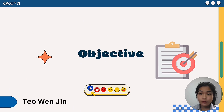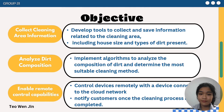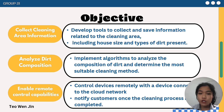My name is Yo Wen Jing and today I am going to present the objectives of our Smart Home Cleaning System. There are three objectives: Collect Cleaning Area Information, Analyse Dirt Composition, and Enable Remote Control Capability. We aim to develop tools to collect and save information related to the cleaning area, including the house size and the types of dirt present.